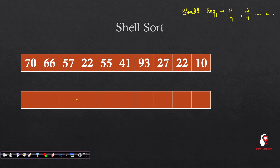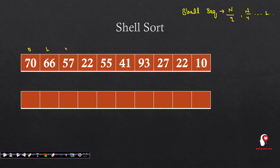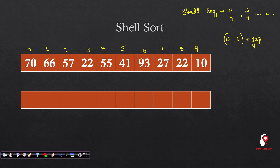To understand what this means: you have an array, compare the first element to the mid element (n/2). For example, compare 70 with 41. You can see the array indexing: 0, 1, 2, 3, 4, 5, 6, 7, 8, and 9. We will compare index 0 with index 5, because that is the constant gap of 5.